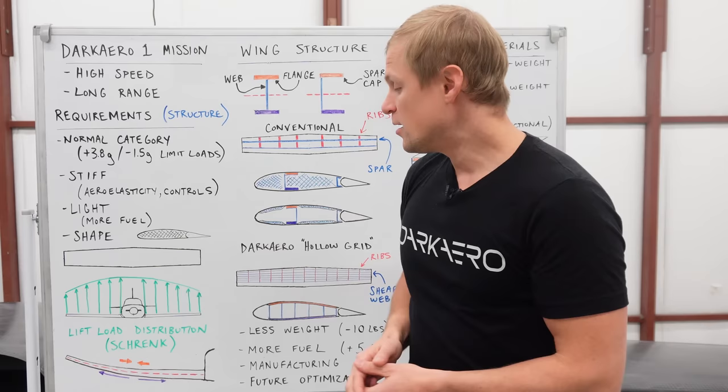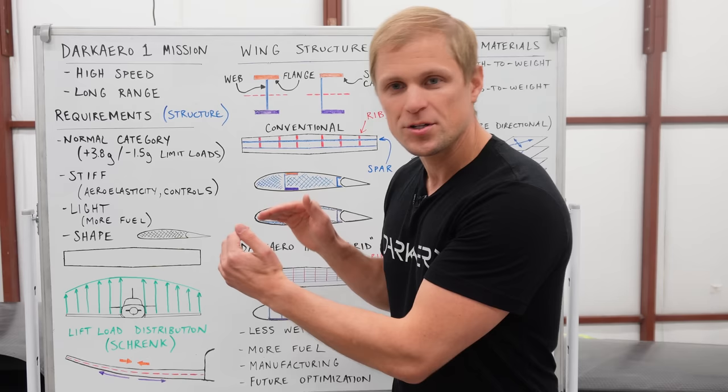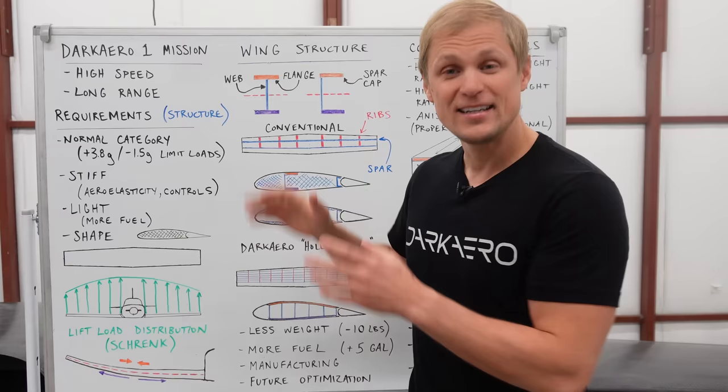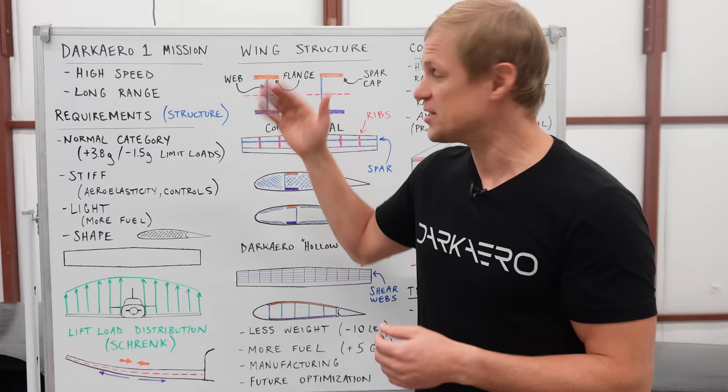You can imagine that as the wing bends up, that's going to force the top portion of the wing to get a little bit shorter. It's going to create compressive stresses in the top of the wing, and then the bottom of the wing is going to get a little bit longer as it bends up. That's going to create tensile stresses in the bottom of the wing. Now that we know a little bit more about the structural requirements and the loads on the wing, we can start to design a structure that's going to withstand these loads.